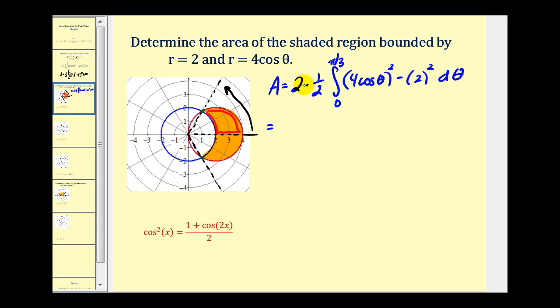So two times one-half, that'll give us one. Four cosine squared theta will give us 16 cosine squared theta. And then we'll have minus four. Now we know by now we have to apply a power reducing formula for cosine squared theta. Let's go ahead and do that. So we'll have 16 times one plus cosine two theta divided by two minus four.